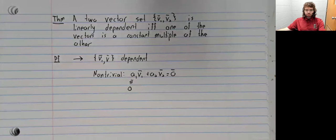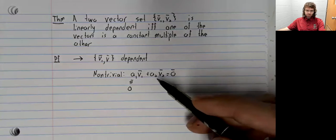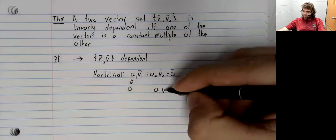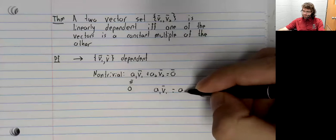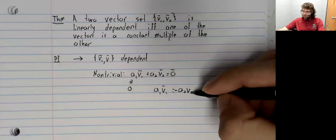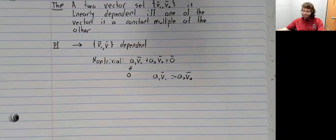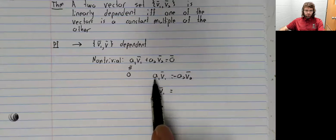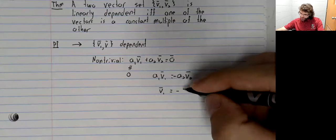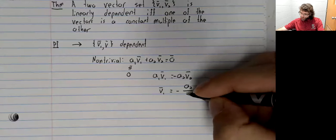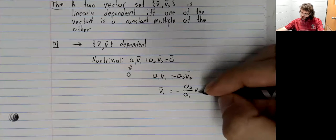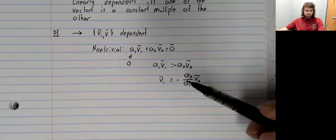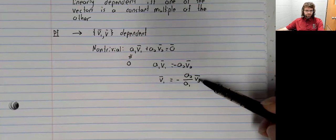The proof goes through the other way if a₂ isn't zero. If a₁ isn't zero, we can take V₂ over to the right and multiply by the reciprocal of a₁. Since a₁ is not zero, there is no division by zero error, and V₁ is a constant multiple of V₂.